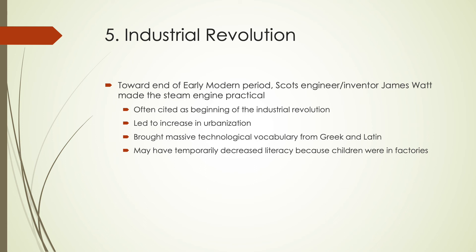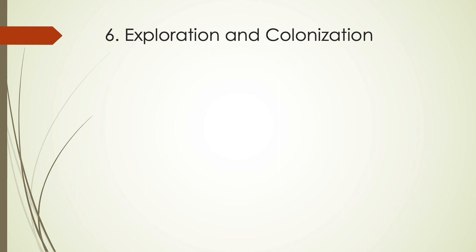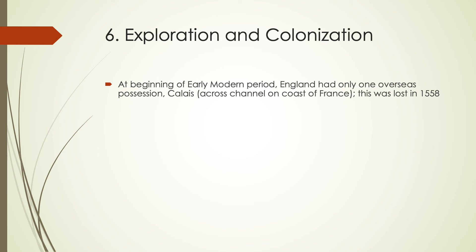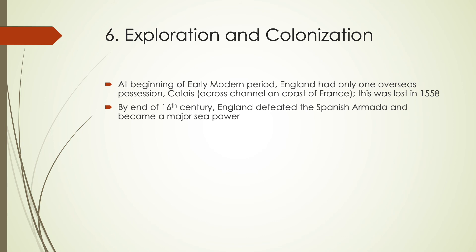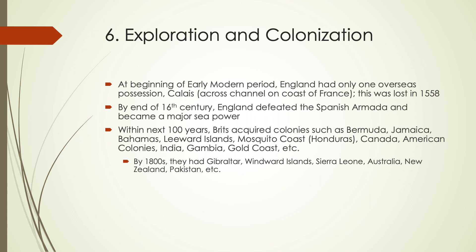The other major thing that happened, especially towards the end of the early modern period, is the rise in exploration and colonization. It wasn't just England doing this — other countries were as well. But at the beginning of this period, England really only had one overseas possession: Calais, the port on the coast of France just across the English Channel. They lost this in 1558. But by the end of the 16th century, England had defeated the Spanish Armada and also became a major sea power.